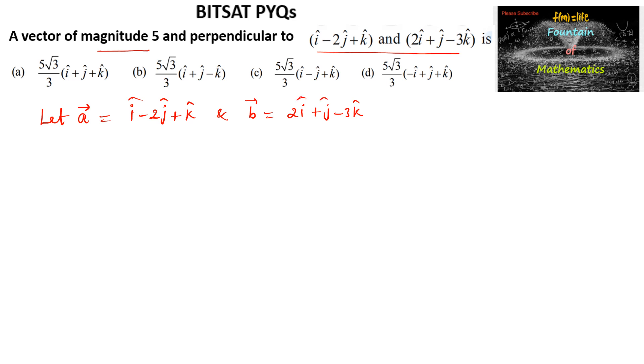We need a vector which is perpendicular to both and having magnitude 5. We can write required vector as 5 times a cross b vector upon mod of a cross b, because a cross b is a vector which is perpendicular to both a and b.